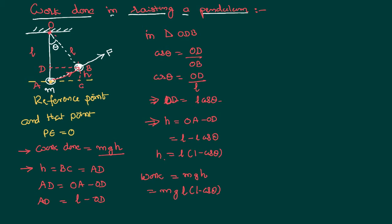Now we would like to extend this discussion a little bit further. If somebody says it is not the bob but a rod, the basic difference is: in the case of a simple pendulum, the entire mass is at the bottom. But in the case of a rod, mass is not at one point — it is distributed over the entire length. So, where we need to consider the point where the mass exists, we shall consider the centre of mass, where the total mass appears to be concentrated. If the entire rod has length l, the centre of mass will be at a distance l/2. The rod is then shifted from its initial position to the new position.